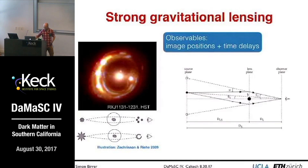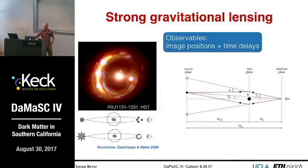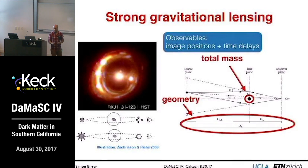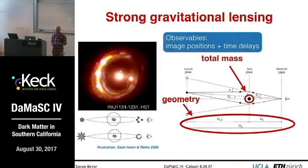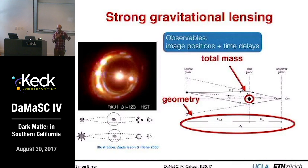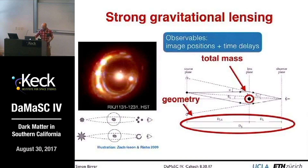What can we learn? There are two main key aspects. First — and this is the topic of my talk — is the mass that actually bends the light. This is really total mass; we don't care whether it's luminous or dark, it's just matter that bends light according to general relativity or your favorite divergent theory. The second part is a geometrical aspect: strong lensing can also be used as a probe of the expansion history of the universe. These are the key features of strong lensing.